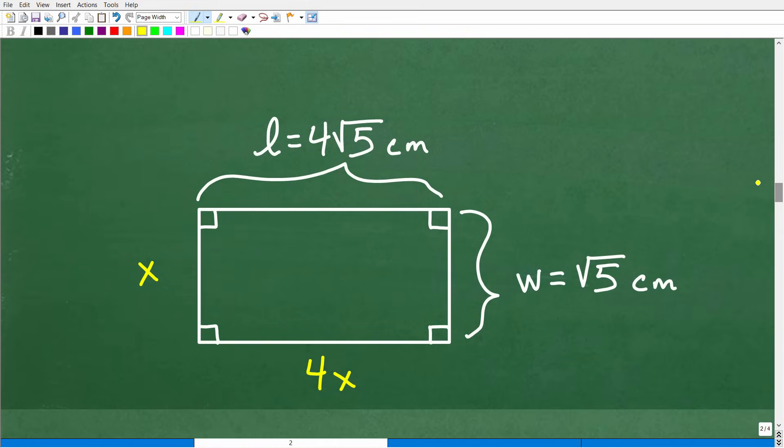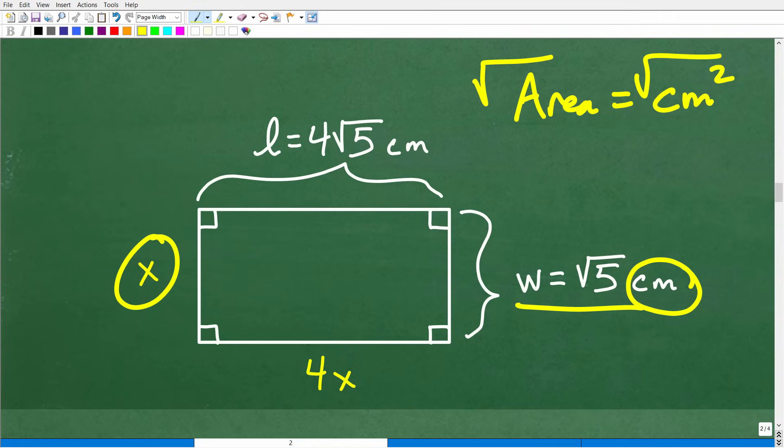So X is equal to square root of five is one solution. And X is equal to negative square root of five is the other solution. Now, because we're dealing with an actual object here, a rectangle with actual measurements, we're going to throw out this negative value. So we're not going to be dealing with negative centimeters. We're going to be dealing with positive centimeters. So we'll keep this as our answer. So X is equal to the square root of five is the correct answer. Okay, but what does that represent? Well, remember, X is the width. So X is equal to the square root of five centimeters.